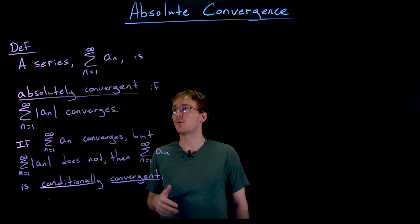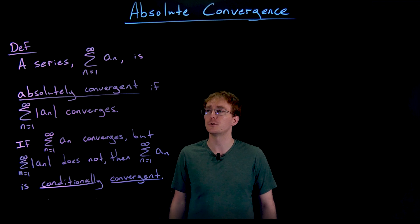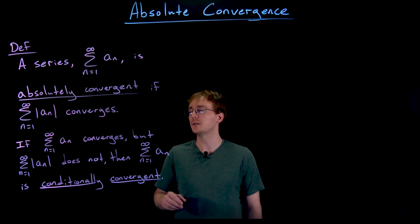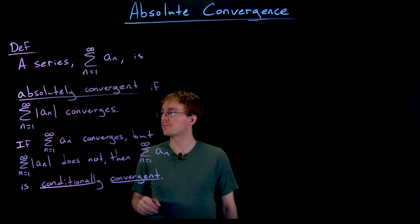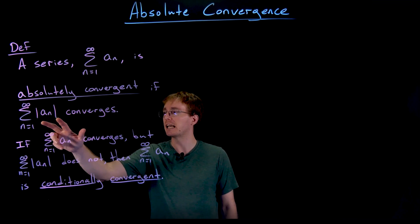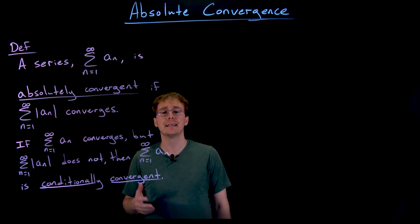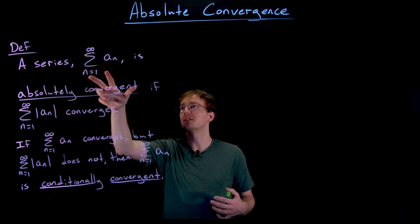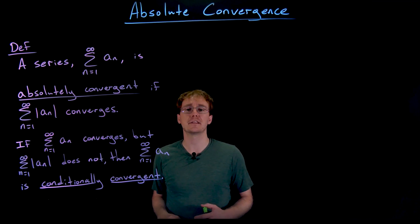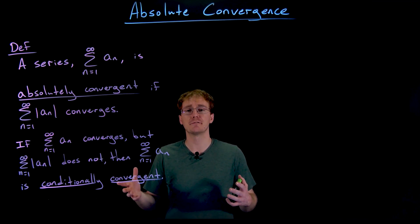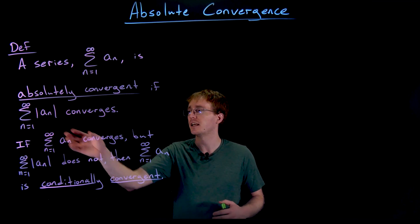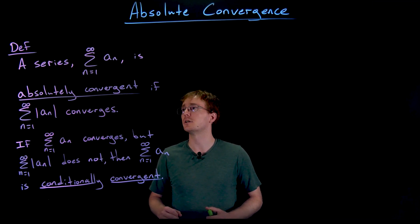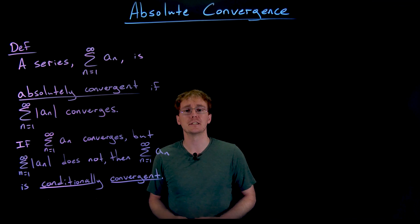Say we have a series of the form the sum from n equals 1 to infinity of a sub n. Then we say that series is absolutely convergent if the sum from n equals 1 to infinity of the absolute value of a sub n is a convergent series. Essentially, we take our starting series, make any negative terms positive, and if that series converges, we say the original series is absolutely convergent.